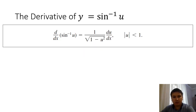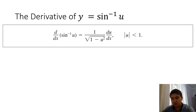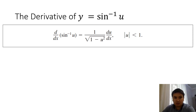Our first theorem regards the derivative of arcsine. The derivative of sine inverse of u is 1 over the square root of (1 − u²), times du/dx. Clearly, du/dx comes from the chain rule, where u is regarded as a function of x.